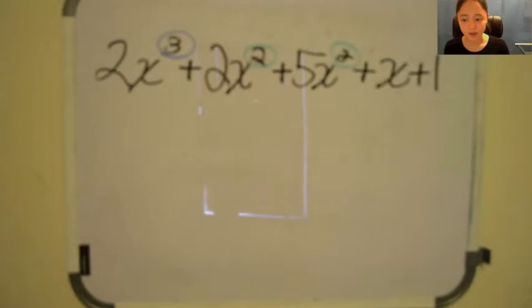Think of adding polynomials as adding members of a family. You have the x cubed, the x squared, the x, and the numbers without x or the plain numbers family. You can only add members of a specific family together.